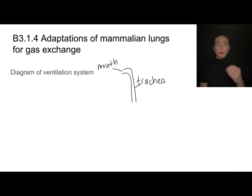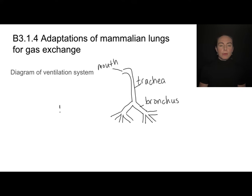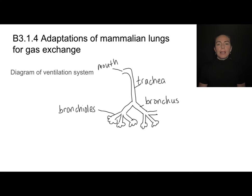We're going to draw that now. Starting with the mouth, which connects to a tube called the trachea. The trachea splits into two tubes, each called a bronchus — singular bronchus, plural bronchi. Each of these tubes splits into a series of smaller tubes called bronchioles. These bronchioles end in sac-like structures called alveoli. The alveoli are the terminal branches of those bronchioles.